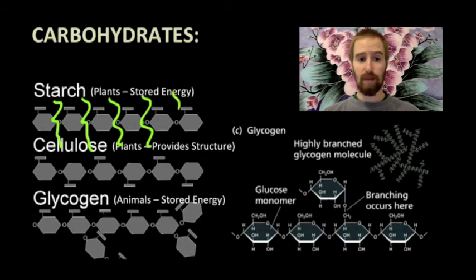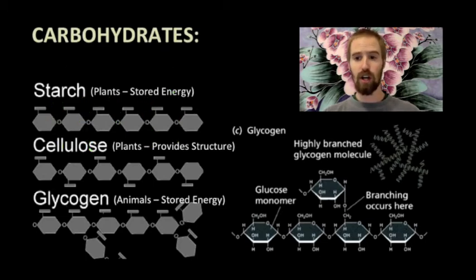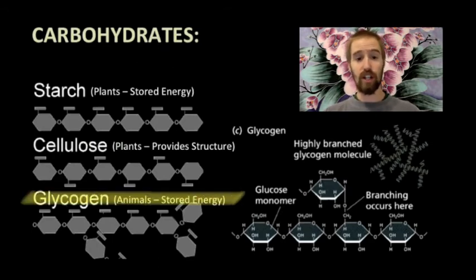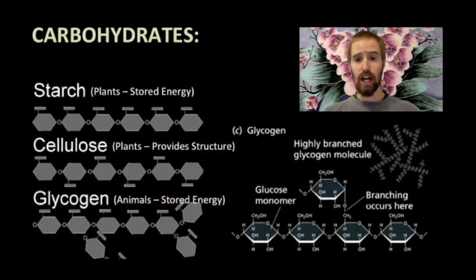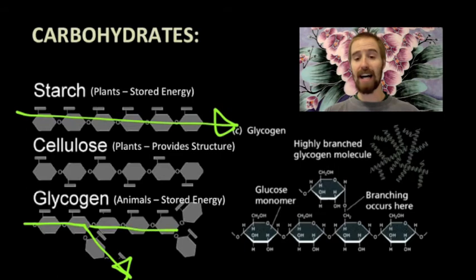Our bodies use some of these monosaccharides right away in order to give us energy to fuel our cells, and when we have extra blood sugar, our bodies assemble these into larger molecules called glycogen, which is sort of like the animal version of starch. It's our way of storing energy for later. Starch, however, is a long straight chain, while glycogen is a highly branched molecule, as we can see here in this picture.